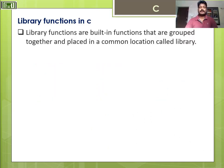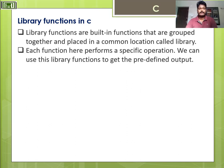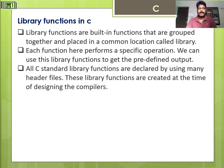Library functions are built-in functions that are grouped together and placed in a common location called a library. Each function performs a specific operation. We can use these library functions to get predefined output, and all C standard library functions are declared using many header files. These library functions are created at the time of designing the compilers.